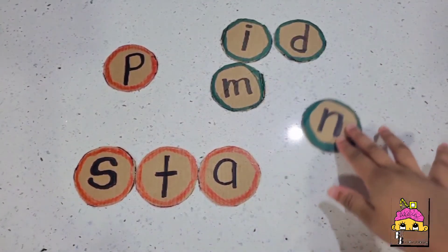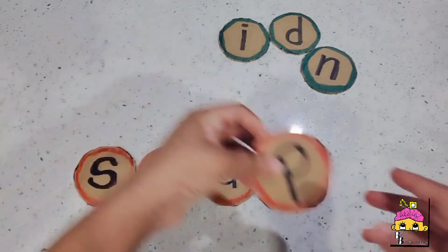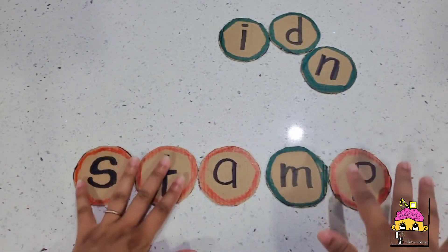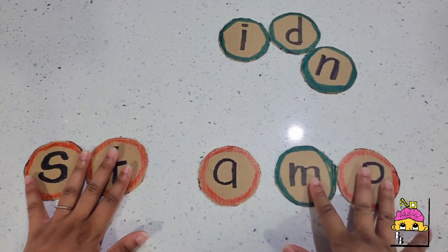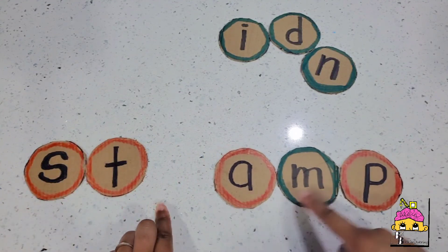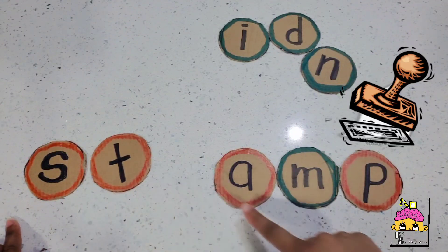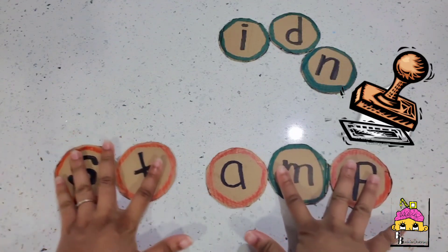Here's another word we could blend. We could take the st and add a M, P to it. So S, T, st, A, M, P, amp, stamp.